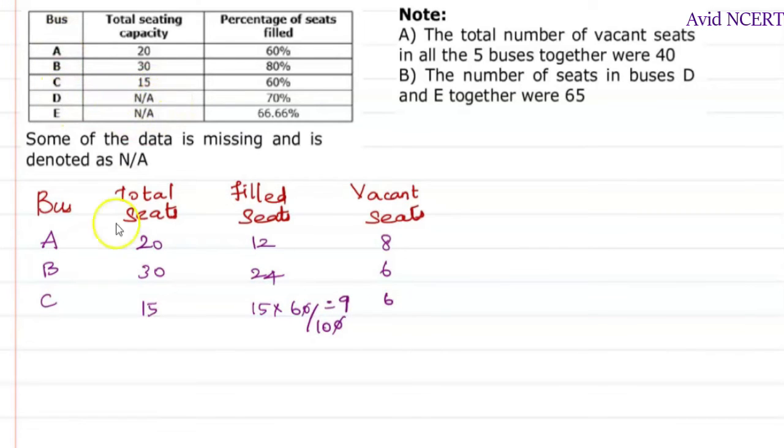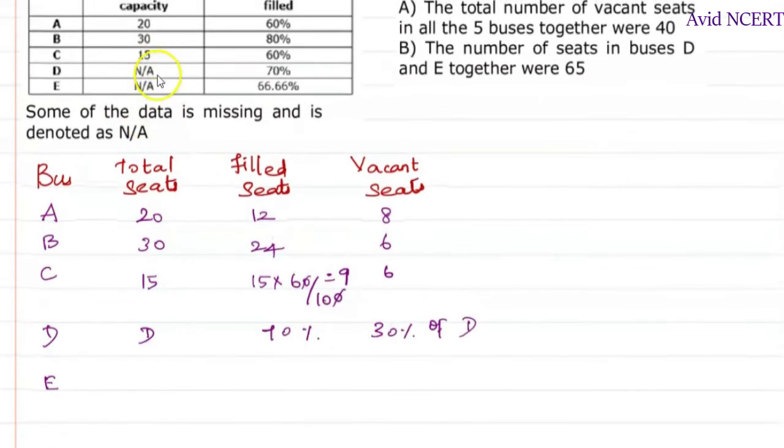For bus D, the total seating capacity is not available, so you can take it as X or D. And the percentage of seats filled here is 70%, which means remaining 30% of the total seats D is vacant. And for bus E, again the total seats capacity is not available, which I am taking it as E. 66% is filled which can be rounded off to 67%, and vacant seat will be remaining 33%, which is 100 minus 67, so 33% of seats E.